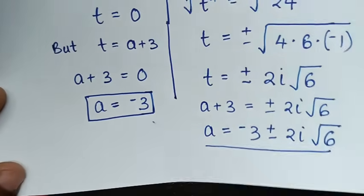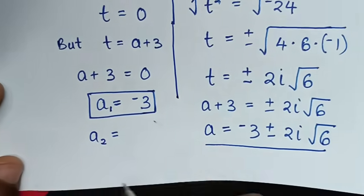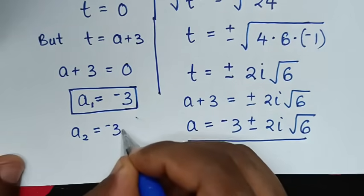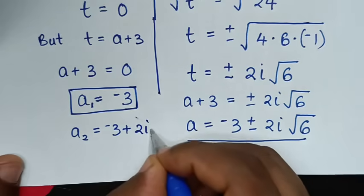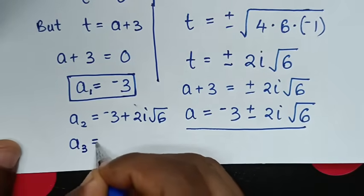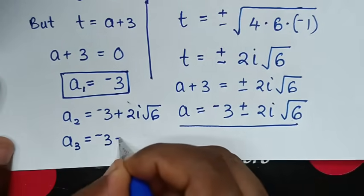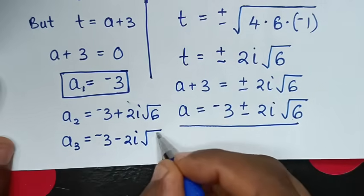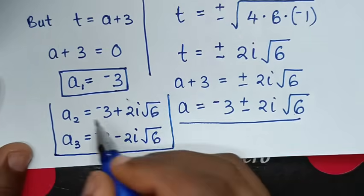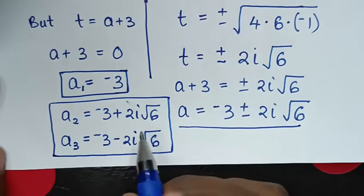Therefore, the first value is a = −3 (real solution). The second value is a = −3 + 2i√6 and the third value is a = −3 − 2i√6 (complex solutions). We have one real solution and two complex solutions, a total of 3 solutions.